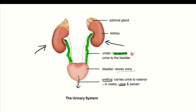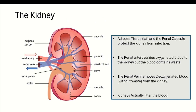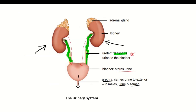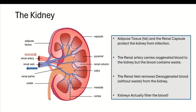In males, the urethra can excrete either urine or semen. So that is the urinary system as a whole. Now let's look at the kidney in more detail. This is how a kidney looks — we've zoomed in to see its parts. For now we'll focus on the adipose tissue, the renal artery, and the renal vein. In the next video we'll go deeper into the cortex, medulla, calyx, renal column, pyramid, and capsule.